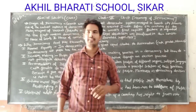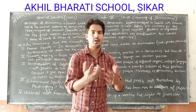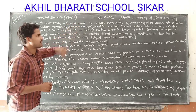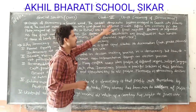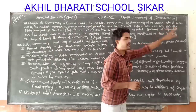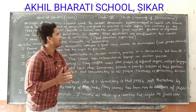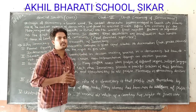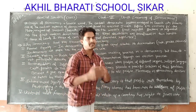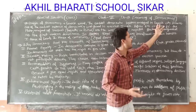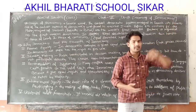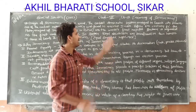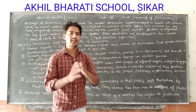Regarding the origin of democracy — kahan se iski shuruat hui — democracy is a Greek word. The earliest democratic system emerged in the Greek city of Athens. Sabse pehle jo democratic system tha, woh emerge hua tha Yunani ke ek shahar, Athens mein.